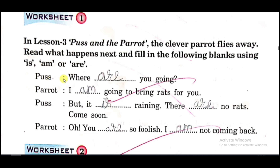Now we have to learn the statement. The statement is: 'Where are you going?' Parrot: 'I am going to bring rats for you.' So after 'I' we use am — I am going.